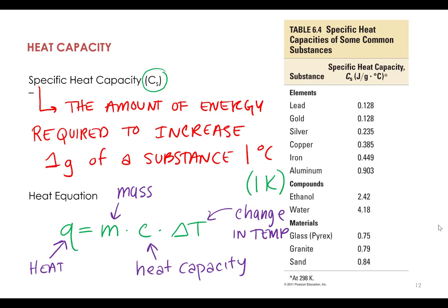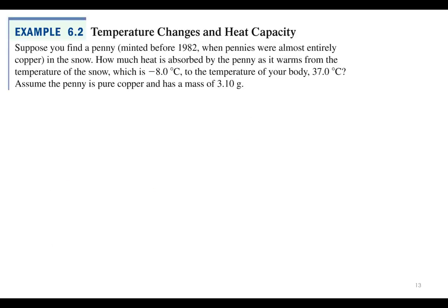So let's try this out. That's a new handy dandy equation. So let's try it out on example 6.2. Suppose you find a penny, minted before 1982, when pennies were almost entirely made out of copper. Remember that? We learned that in Gen Chem 1 laboratory. So we're supposed to find a penny in the snow. Where are we at? Let's pretend where we're at.